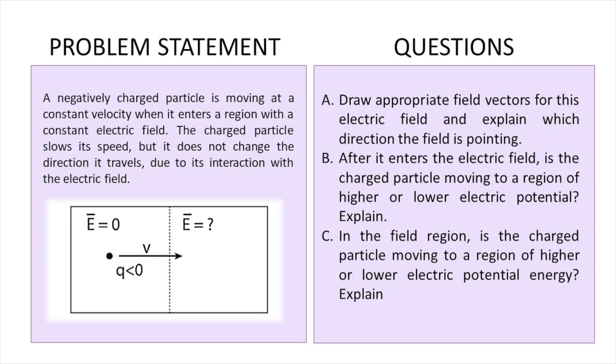So this is a problem that we're going to be solving today. A negatively charged particle is moving at a constant velocity when it enters a region with a constant electric field. The charged particle slows its speed, but it does not change the direction it travels due to its interaction with the electric field. So we have to draw appropriate field vectors for this electric field and then explain which direction the field is pointing.